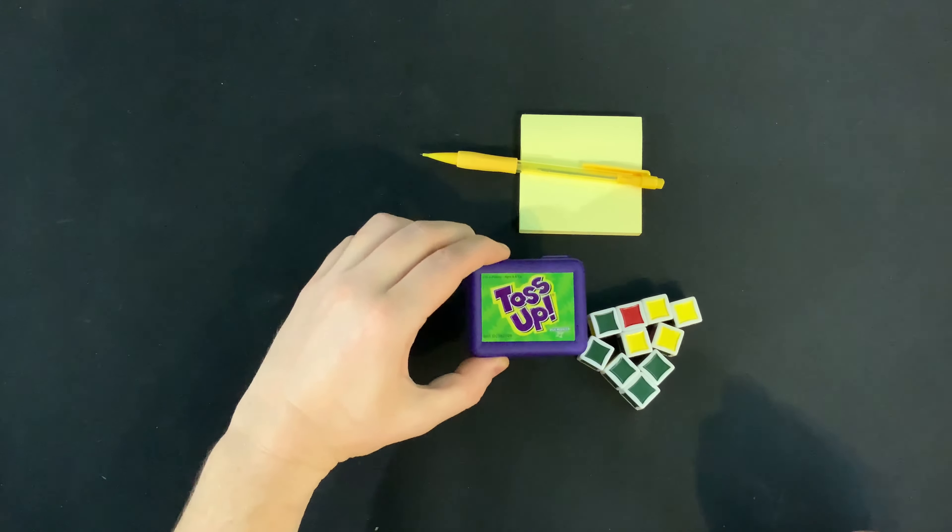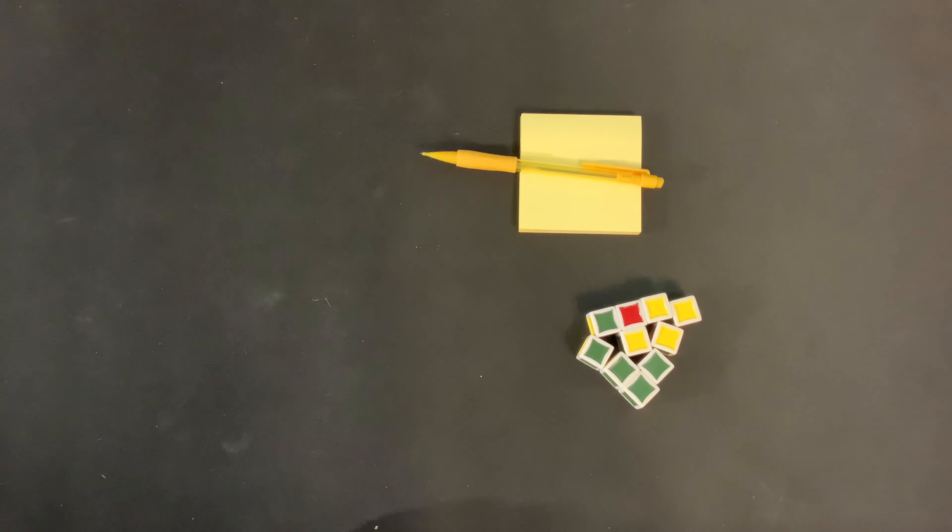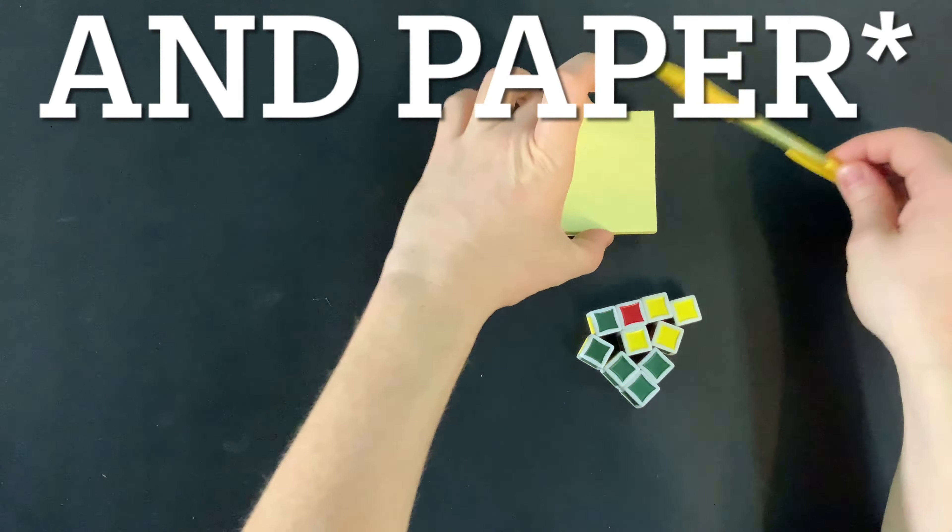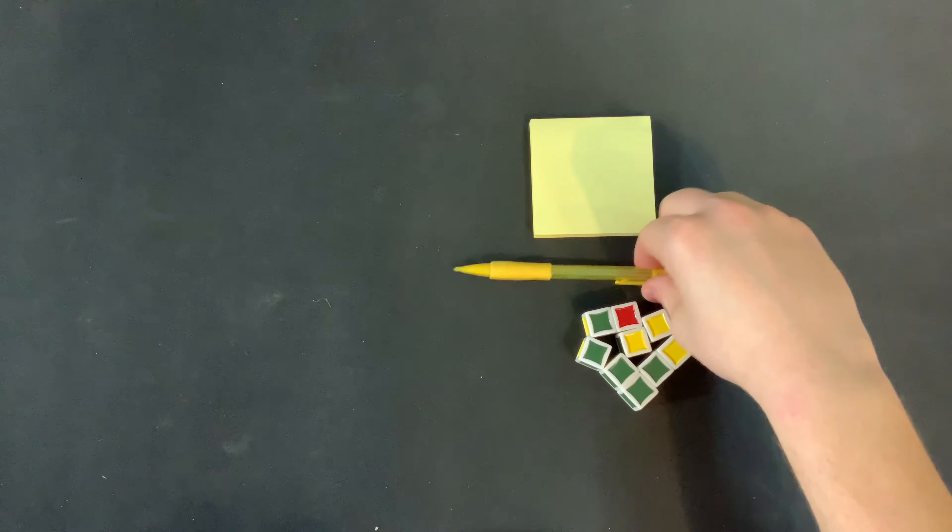This is for two to six players, ages eight plus. And in Toss-Up, first thing you're going to need is a pencil and pen to keep track of the score. Make sure one person is in charge of the score.